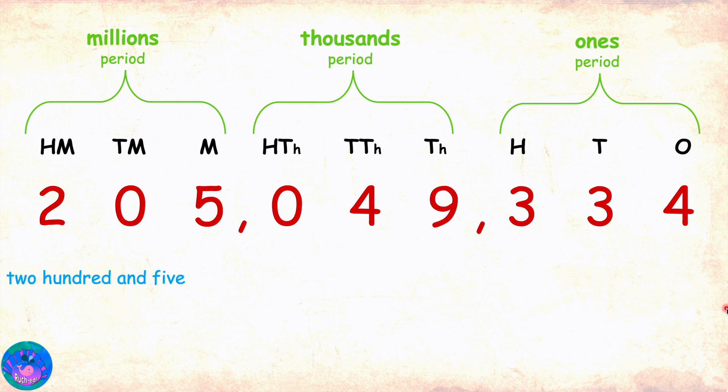Now, I will read the number. Two hundred and five million, forty-nine thousand. Since zero, four, nine is read as forty-nine, three hundred and thirty-four. Is that correct? Yes, Sam. Very good.